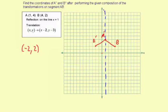Now the translation is X, Y goes to X minus 2, Y minus 3. So we're going to be taking negative 2 and then subtracting 2, so it would be negative 2 minus 2. And then the 2 for the Y is going to have 3 subtracted from it. So it's 2 minus 3.